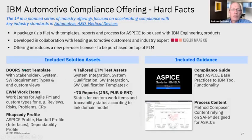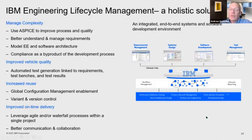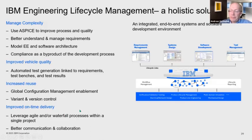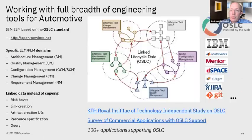The IBM Engineering Lifecycle Management solution really helps you manage complexity, deliver the regulation and audit controls you need, improve vehicle quality, increase efficiency, and improve delivery time. Let me show a real example of how companies use this offering. I want to talk a little about OSLC — Open Services for Lifecycle Collaboration — a linked open service lifecycle management standard. IBM ELM is based on that standard, and the idea is that you have this linked data set accessible from any tool.